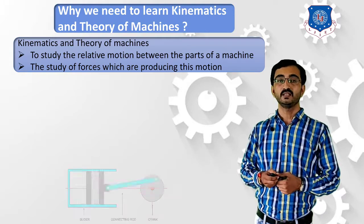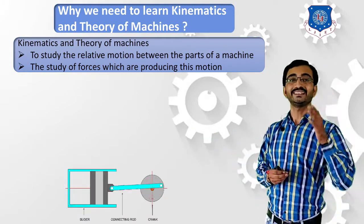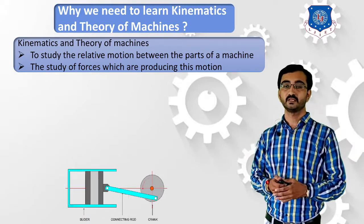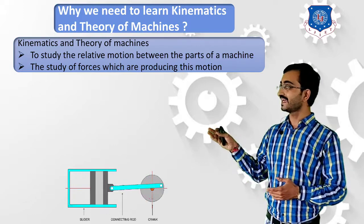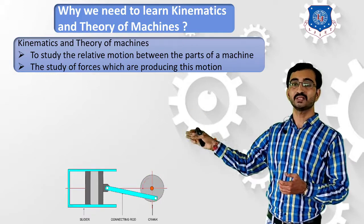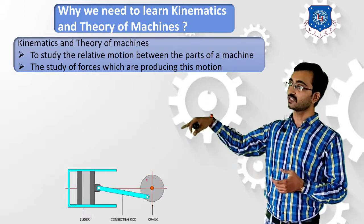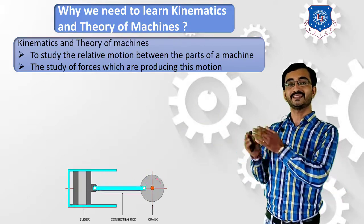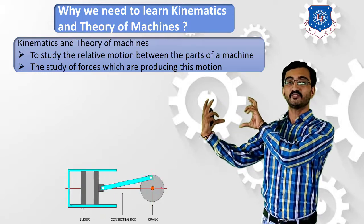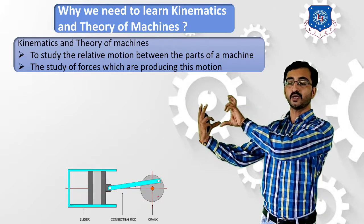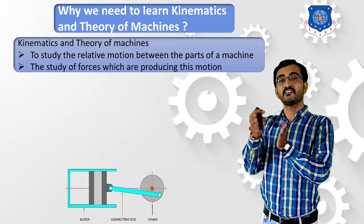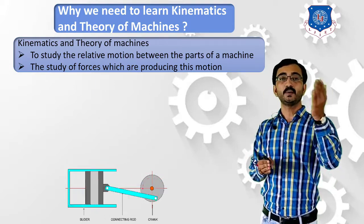Let's understand this with one example. In this diagram you can observe a reciprocating IC engine, which you have studied in your second semester. The first component, which rotates, is known as a crank. The second component, which oscillates, is termed as a connecting rod. This connecting rod is connected to a piston, which reciprocates inside a fixed frame known as a cylinder. Each component has relative motion compared to the other.